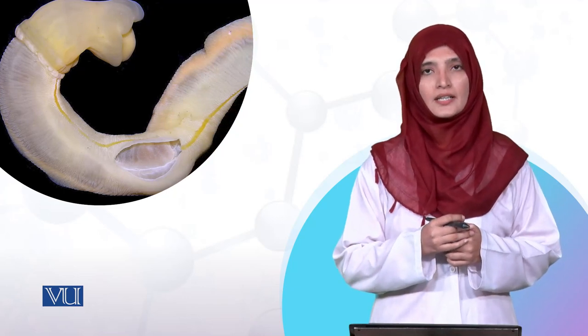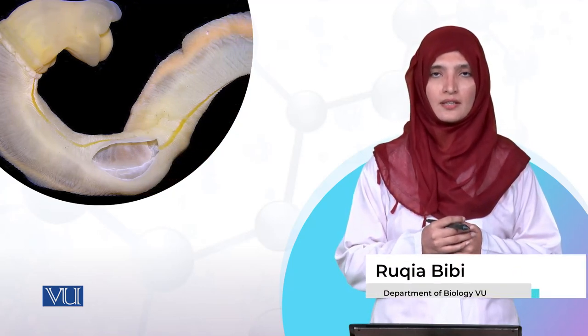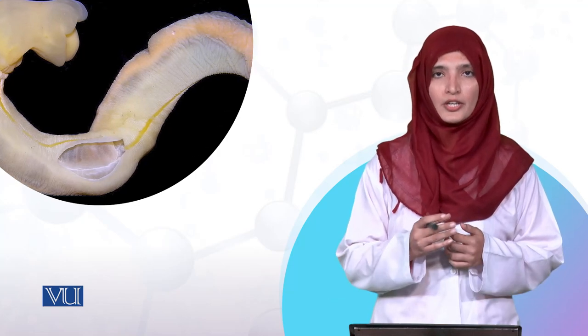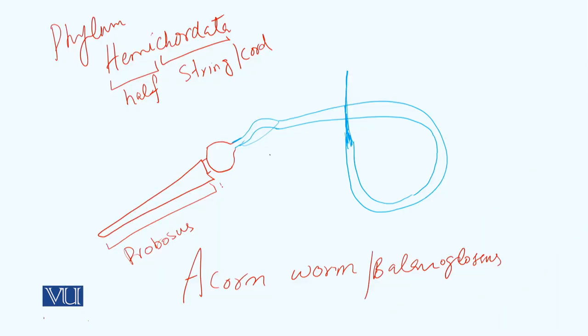If we look at it on the diagram, we can see that it has three body parts. The first front end is called proboscis, the second is collar, and this one is the trunk area.